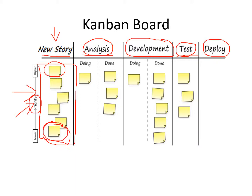We need to know how long a story will take to develop, what its complexity is, and so on. Once everything is in order, we move the story to the next phase for further analysis — for example, who will do this story. Once that analysis is done, we move it to development. When it's done, we put it in the done phase, the tester fetches it and tests it, and then it goes to the deployment phase.